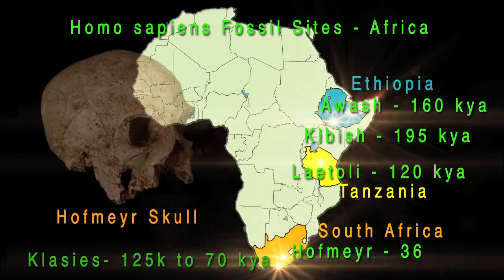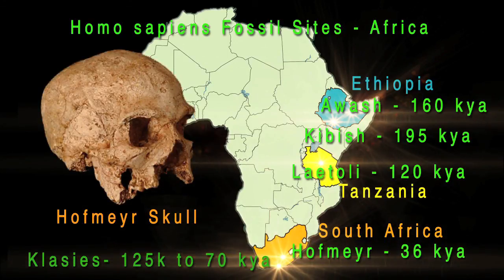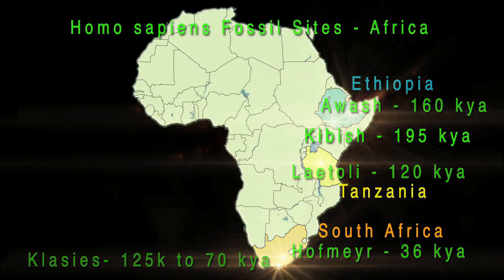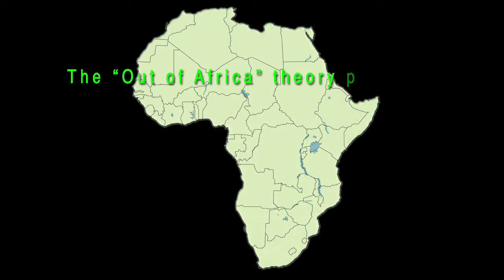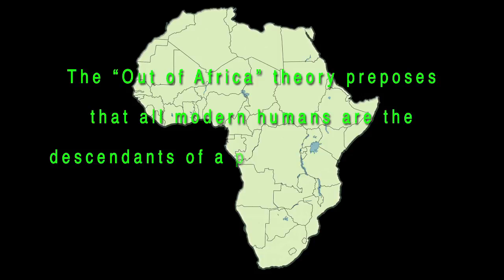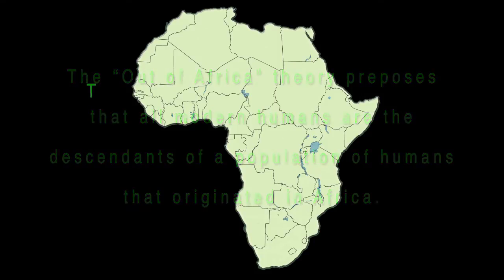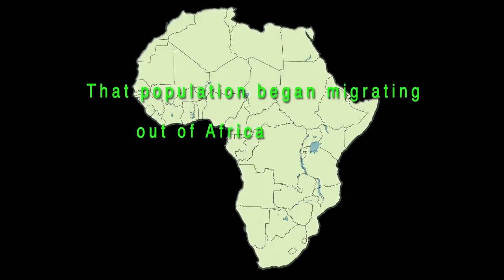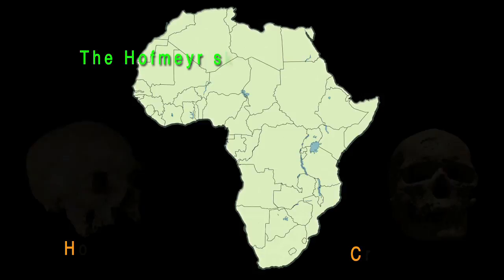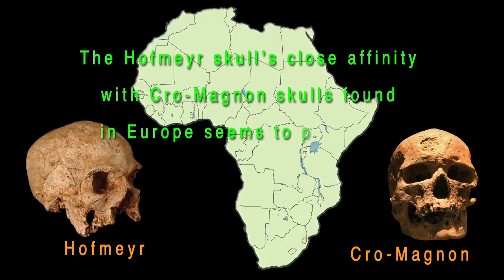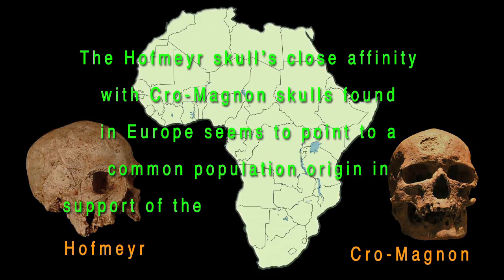Another important human fossil find is the Hofmeyr skull dated around 36,000 years ago. The skull was found in 1952 near Hofmeyr, a small town in Eastern Cape Province, South Africa. Recent analysis of the skull showed that it displayed features with a close affinity to the Cro-Magnon people who lived in Eurasia. This lends support to the Out of Africa theory which is based on genetic studies of human DNA. The Out of Africa theory proposes that all modern humans are the descendants of a population of humans that originated in Africa. That population began migrating out of Africa 70,000 to 60,000 years ago. The Hofmeyr skull's close affinity with Cro-Magnon skulls found in Europe seems to point to a common population origin in support of the Out of Africa theory.